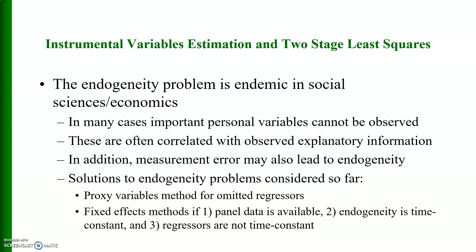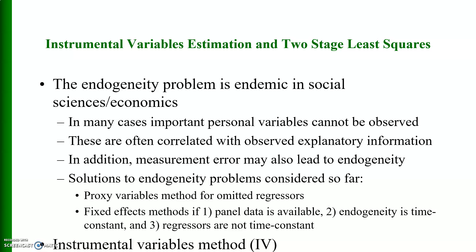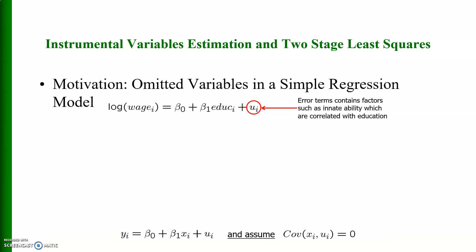Endogeneity occurs when important variables cannot be observed; these variables are often correlated with the observed explanatory variables. Additionally, measurement error may also cause endogeneity. Solutions to the endogeneity problem include proxy variables for omitted regression, fixed effects method if panel data is available and endogeneity is time-constant, and the instrumental variables method.